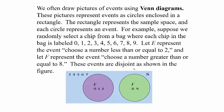For example, suppose we randomly select a chip from a bag where each chip is labeled with the numbers 0 through 9, so there are 10 possible outcomes. If we let E represent the event of choosing a number less than or equal to 2 — that's 0, 1, 2 — and F represent choosing a number greater than or equal to 8 — that's 8 or 9 — these events are disjoint because the two circles don't overlap; they cannot happen at the same time.